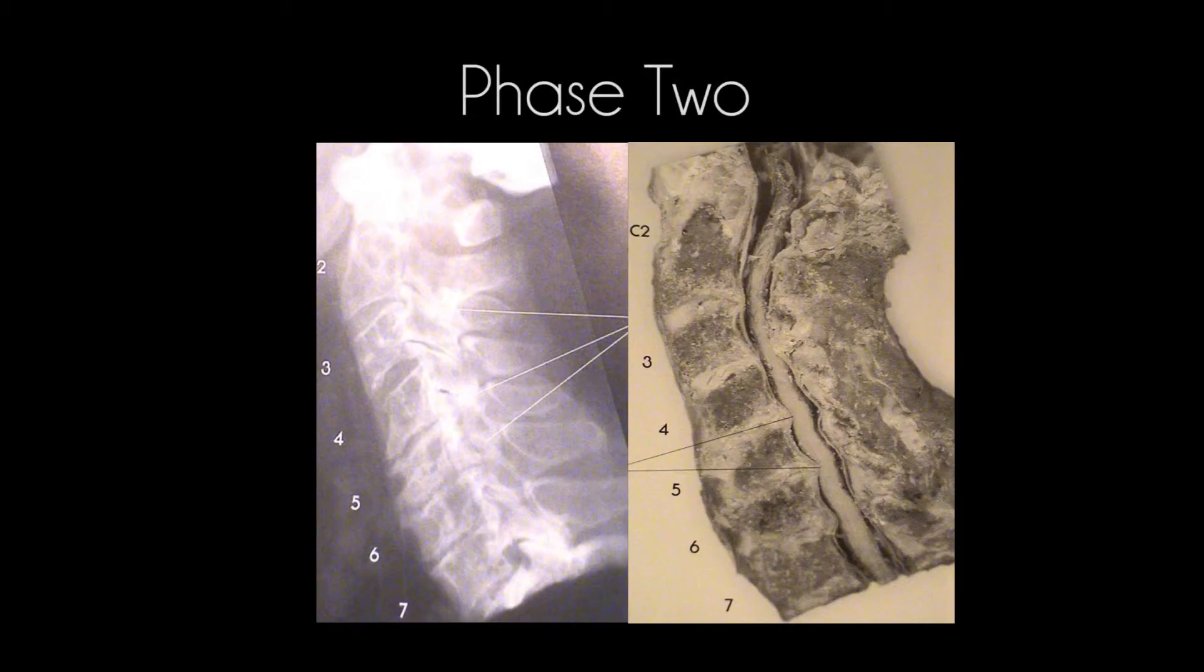In phase two, as you can see here, there are bumps—that's spinal arthritis. Those bone spurs are actually puncturing into the spinal cord and interfering with the way the body works.